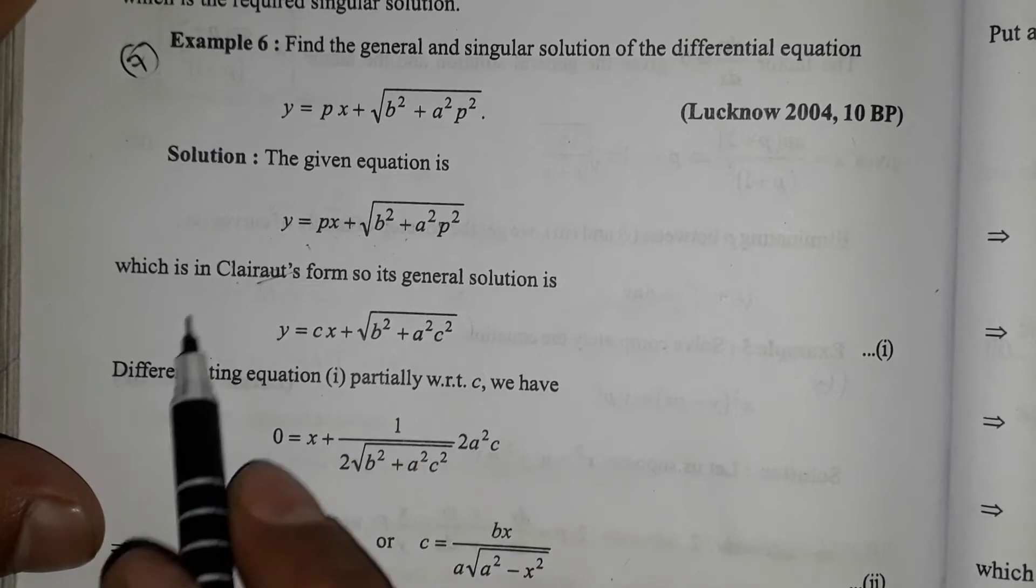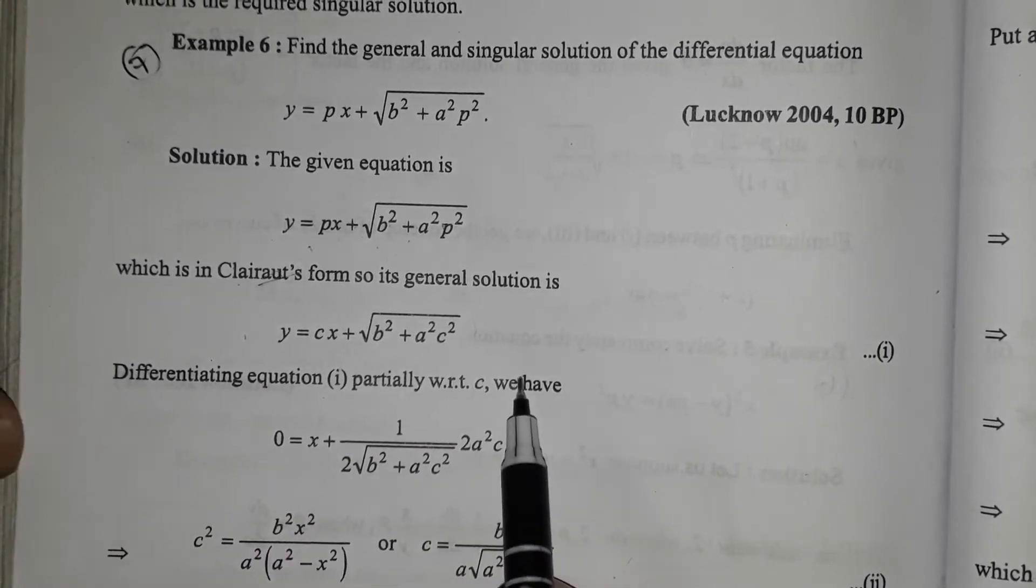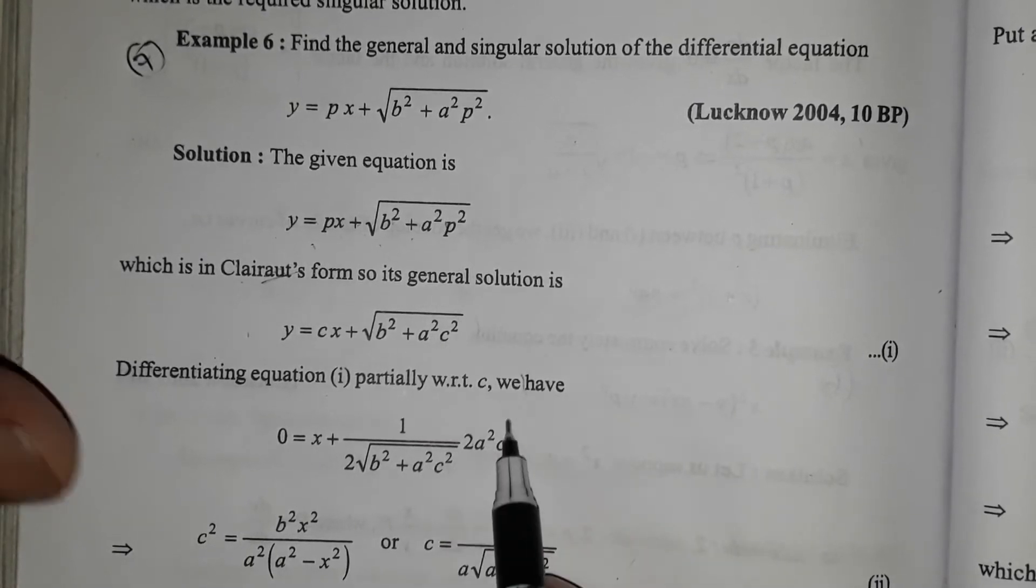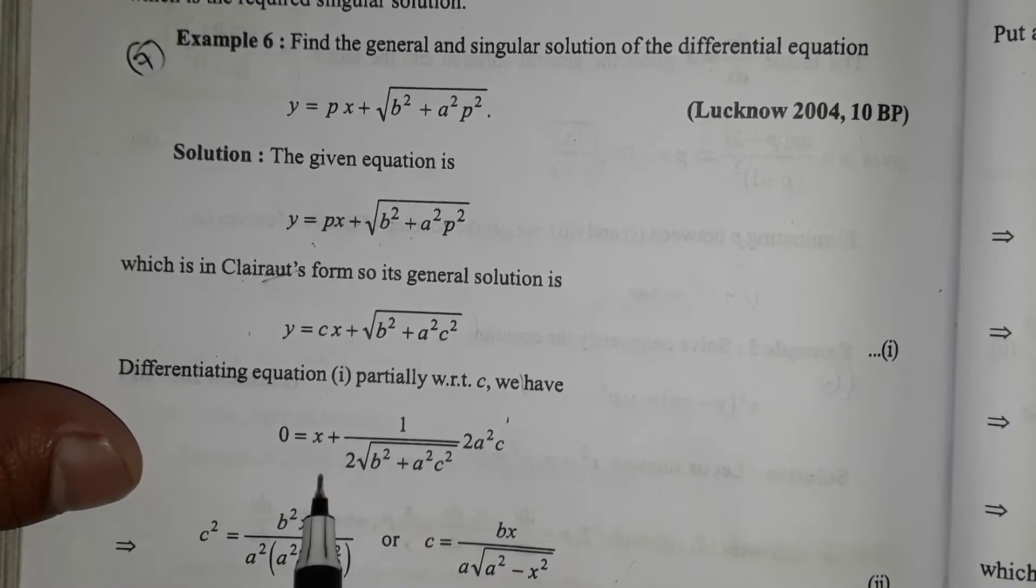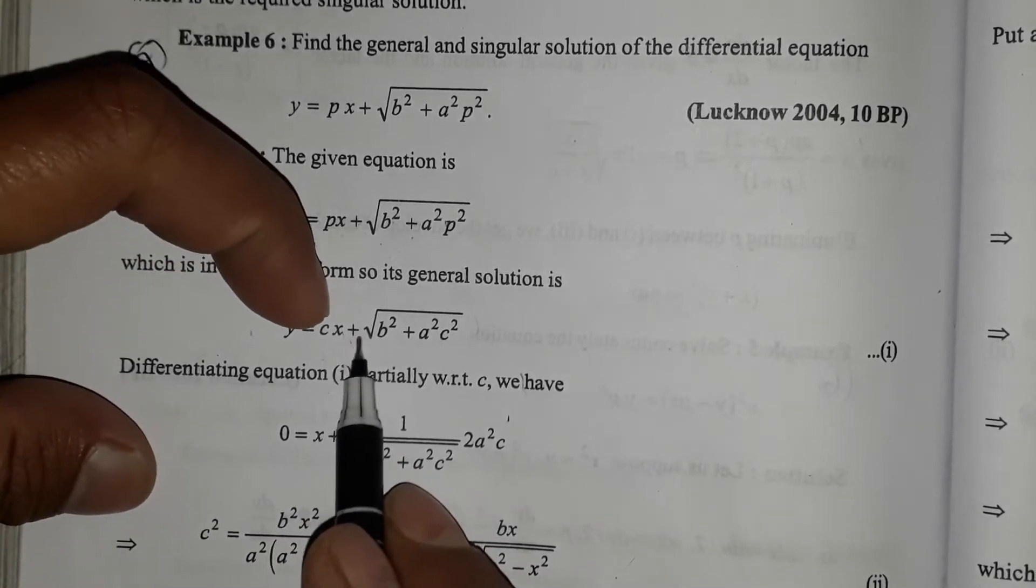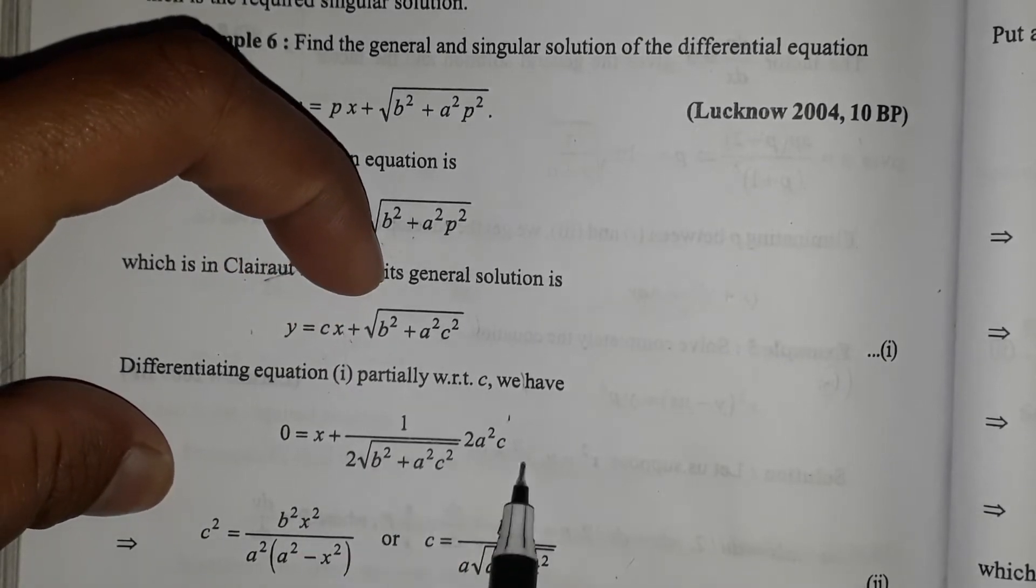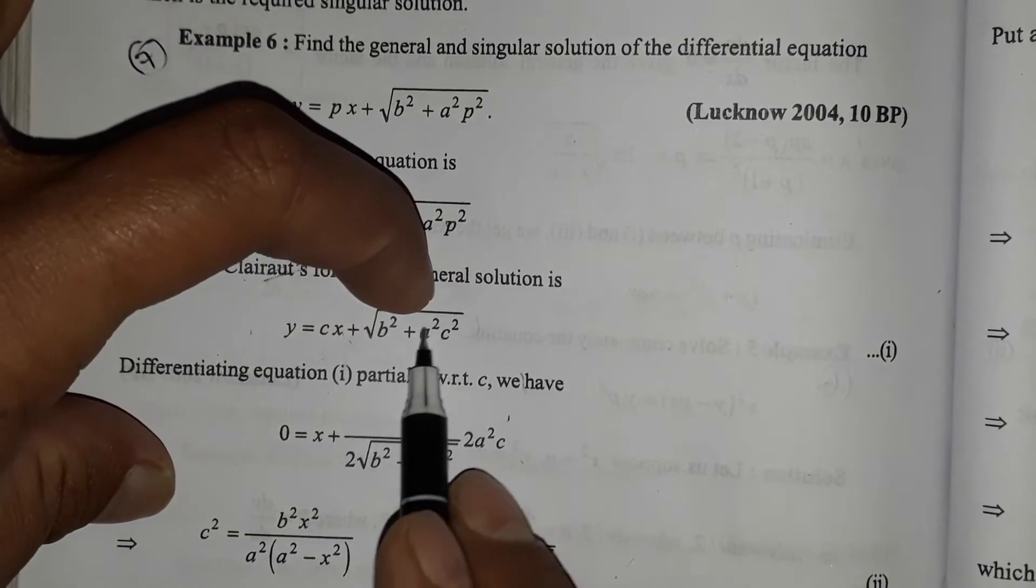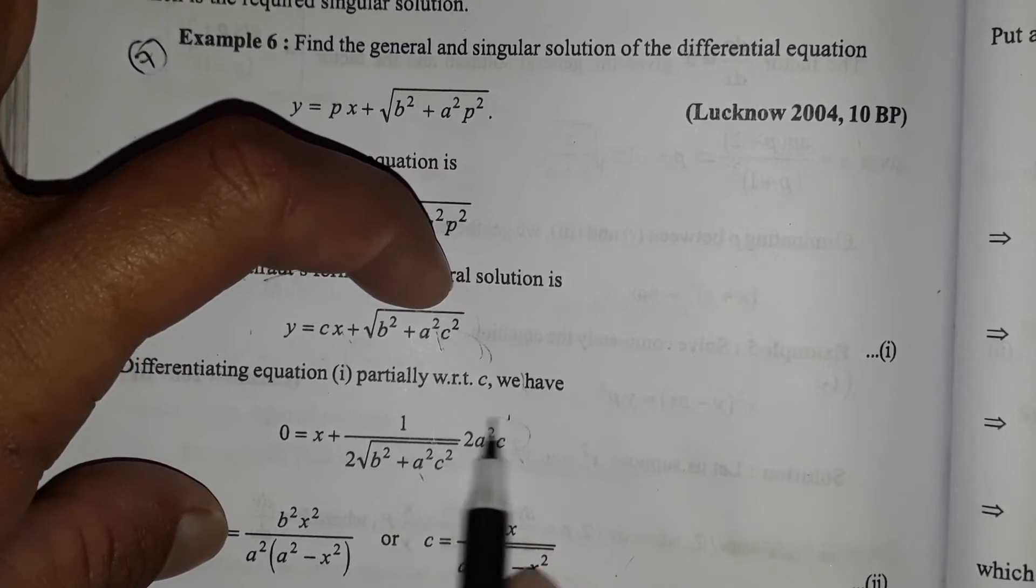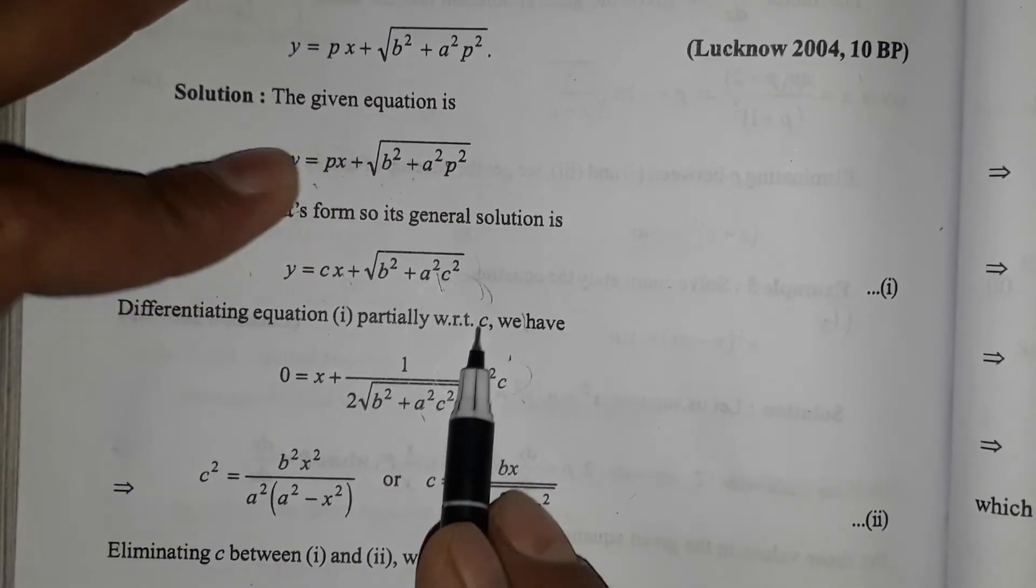For the general solution, p equals c. Now differentiating partially with respect to c, we have 0 equals x plus the partial derivative of the square root term with respect to c.